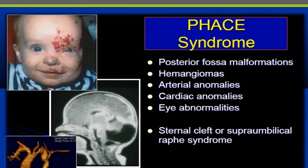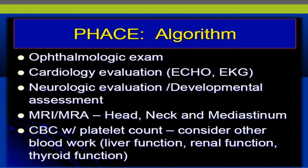PHACE syndrome is a syndromic type of hemangioma composed of posterior fossa malformations, hemangioma, arterial anomalies, cardiac anomalies, eye abnormalities, and sternal cleft — also known as PHACES when a supraumbilical raphe is present. Evaluation should include ophthalmological exam, cardiological and neurological evaluation, developmental assessment, MRI and MR angiography of the head, neck, and mediastinum, as well as CBC and thyroid function tests.